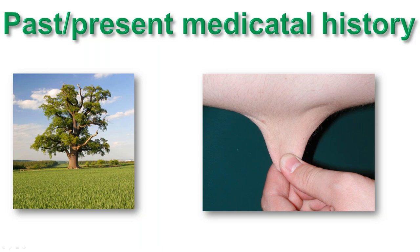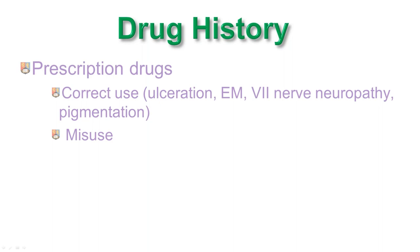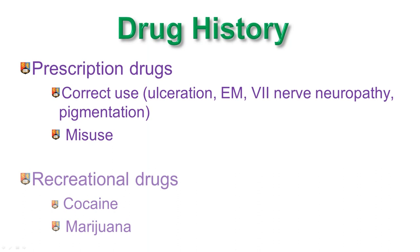After your medical history, you take a drug history. Prescription drugs can produce signs and symptoms in gingival and periodontal tissues even when used correctly — I've shown examples of erythema multiforme, ulceration, and pigmentation. You can get a trigeminal nerve neuropathy with certain drugs, particularly antiretrovirals used for HIV management like AZT, which can cause a very painful trigeminal nerve neuropathy normally presenting as peripheral neuropathy in the feet and calves but sometimes presenting in the face. Prescription drugs can also be misused, causing side effects.